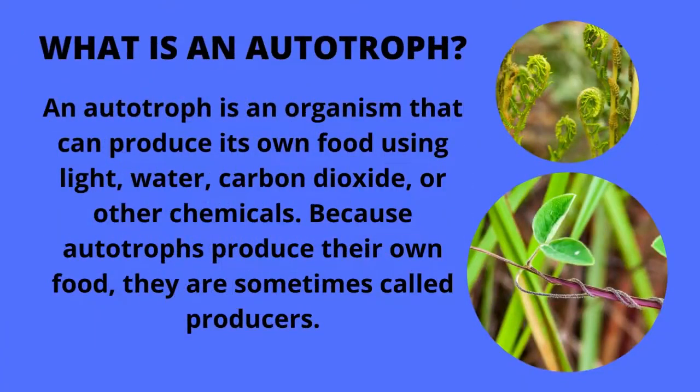What is an autotroph? An autotroph is an organism that can produce its own food using light, water, carbon dioxide, or other chemicals. Because autotrophs produce their own food, they are sometimes called producers. Plants are the most familiar type of autotroph, but there are many different kinds of autotrophic organisms.